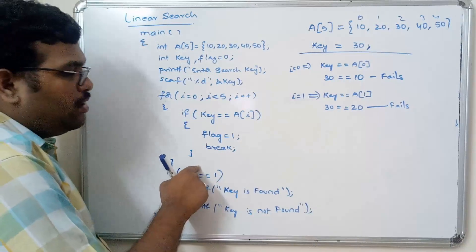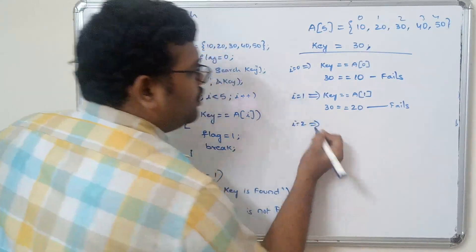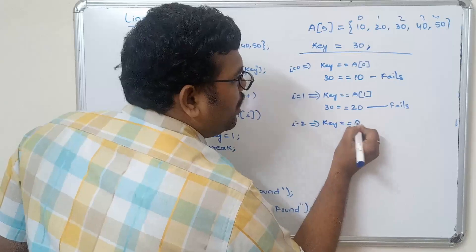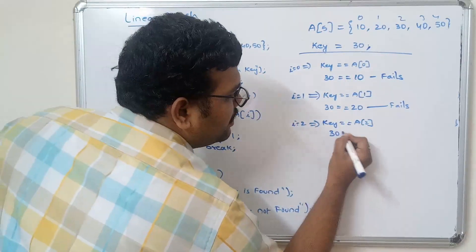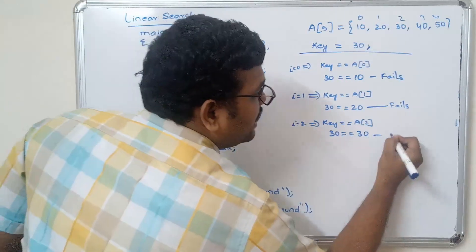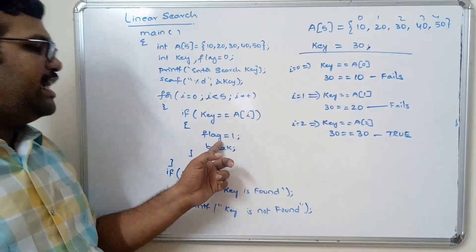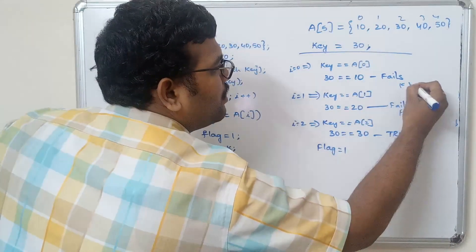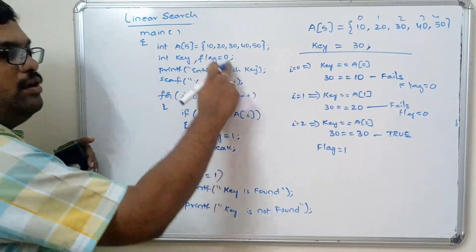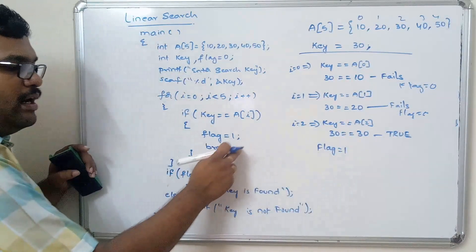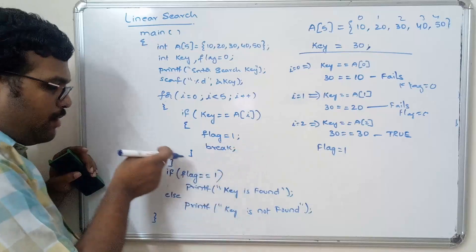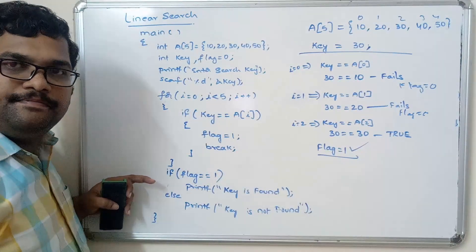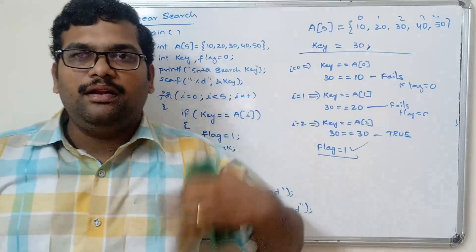There is no else block, so i is incremented to 2. The condition 2 less than 5 is true. Now if key equals a[2]: key is 30 and the element at index 2 is also 30, so the condition is true. Flag is set to 1 — previously flag was 0 and it now becomes 1 — and break is executed. The control comes out of the loop. Since flag equals 1, the condition is true and 'key is found' is printed. I hope you understood this simple linear search.